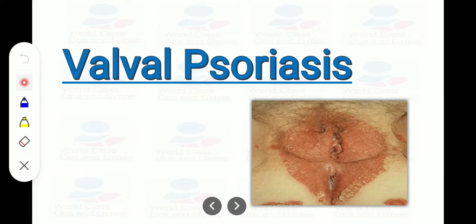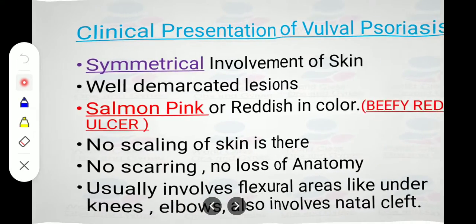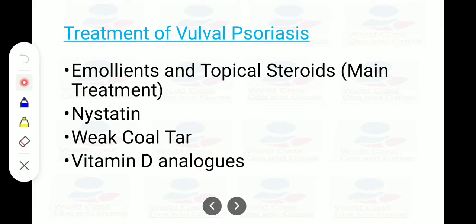Psoriasis of the vulva presents with symmetrical, well-demarcated lesions. The characteristic feature is a salmon-pink or beefy red appearance. There is no scaling, no scarring, and no loss of anatomy. It typically involves flexural areas like underneath elbows and the natal cleft. Treatment is by emollients, topical steroids, nystatin (antifungal), and vitamin D analogues.